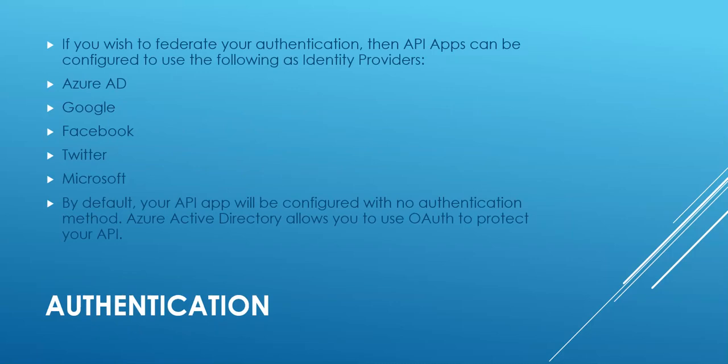Authentication: If you wish to federate the authentication, then API apps can be configured to use the following as identity providers: Google, Azure AD, Facebook, Twitter and Microsoft. By default, the API app will be configured with no authentication method. Azure AD allows you to use OAuth to protect the API.